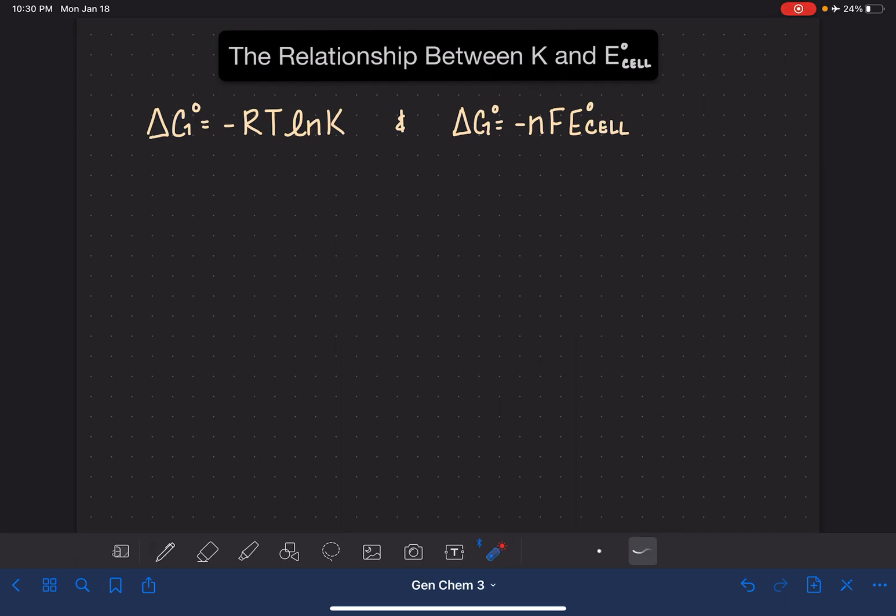So because negative RT ln K is equal to delta G and negative NF E cell is equal to delta G, we can go ahead and just combine these two equations, and we can say that negative RT times the natural log of K is equal to negative NF E cell.